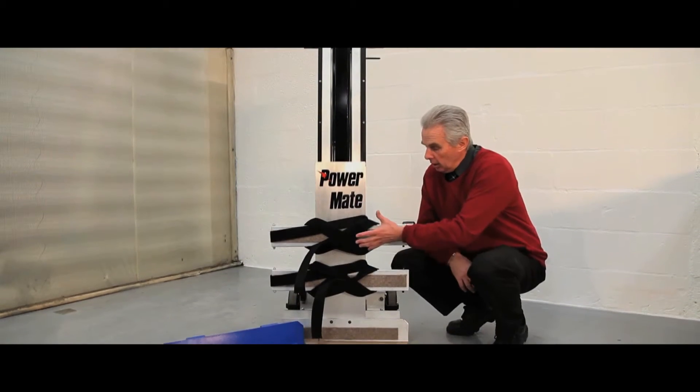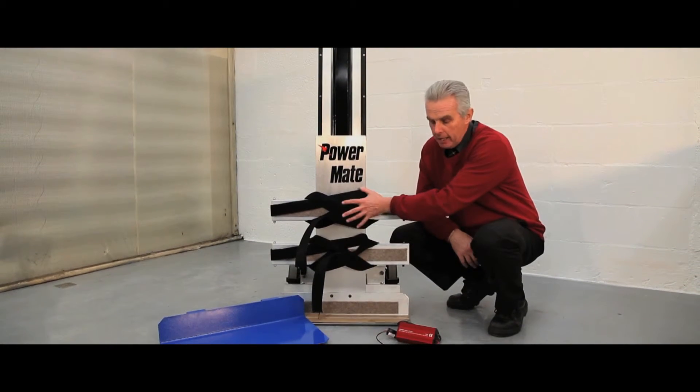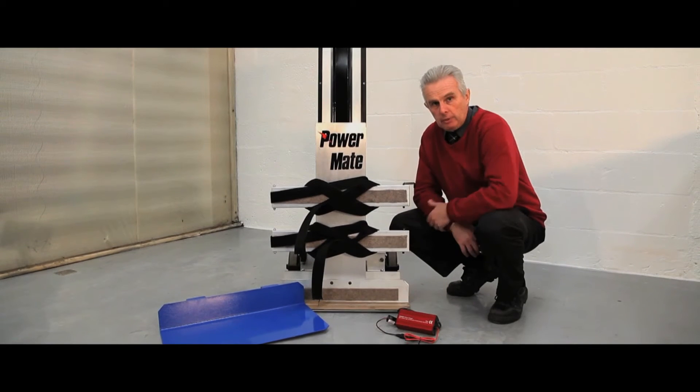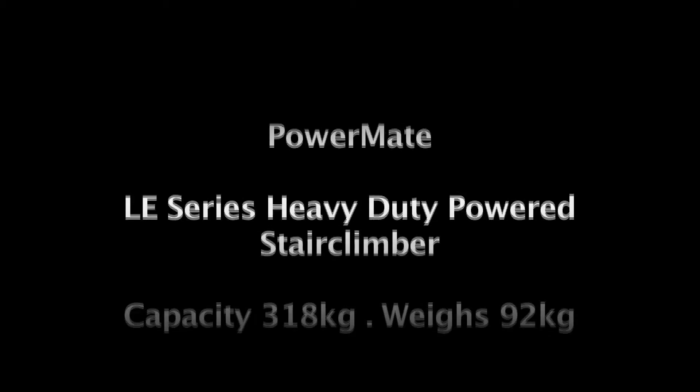The LE1 is supplied as standard with two straps, a battery, charger and a choice of tow plate. For professional, safe and cost effective load handling, the Stanley Handling Powermate range.